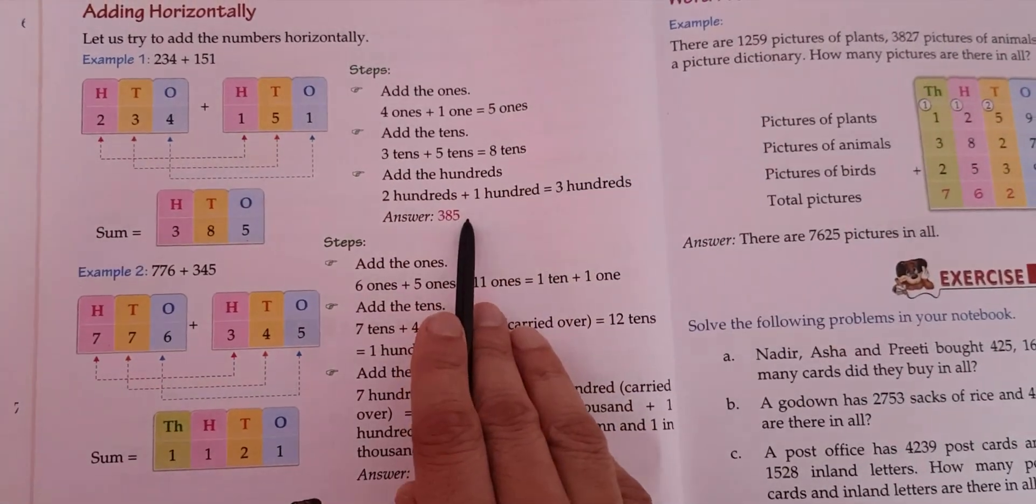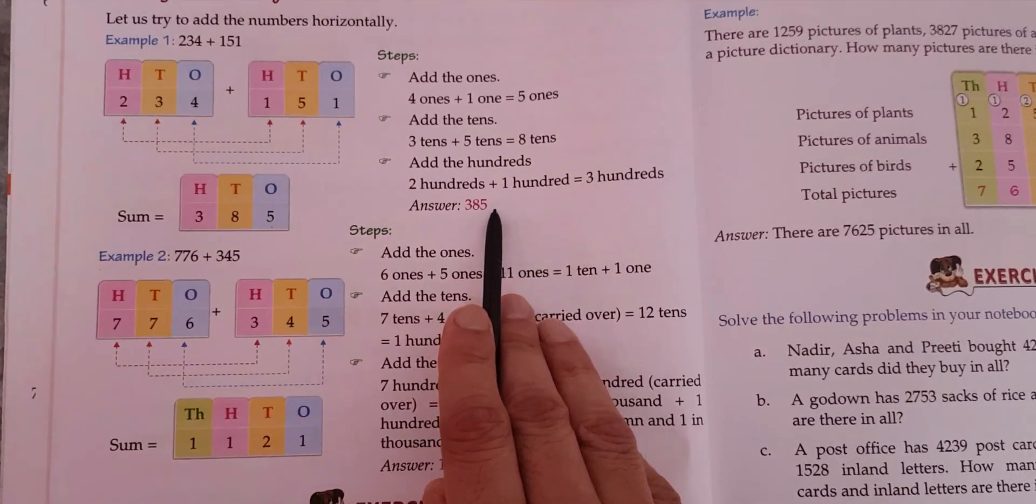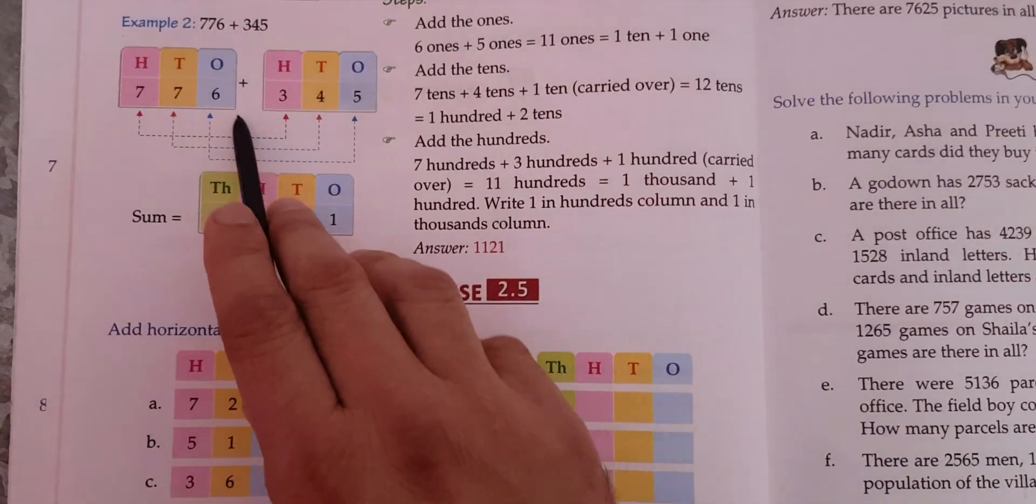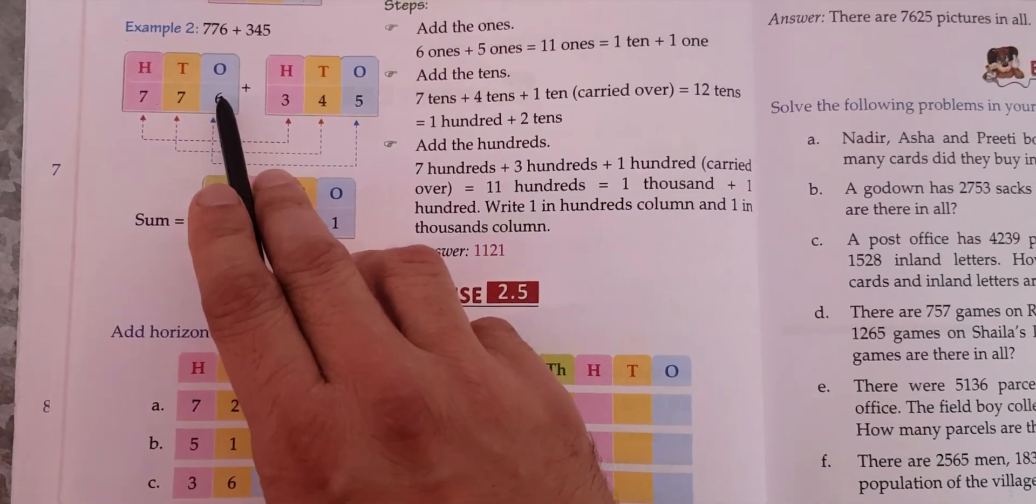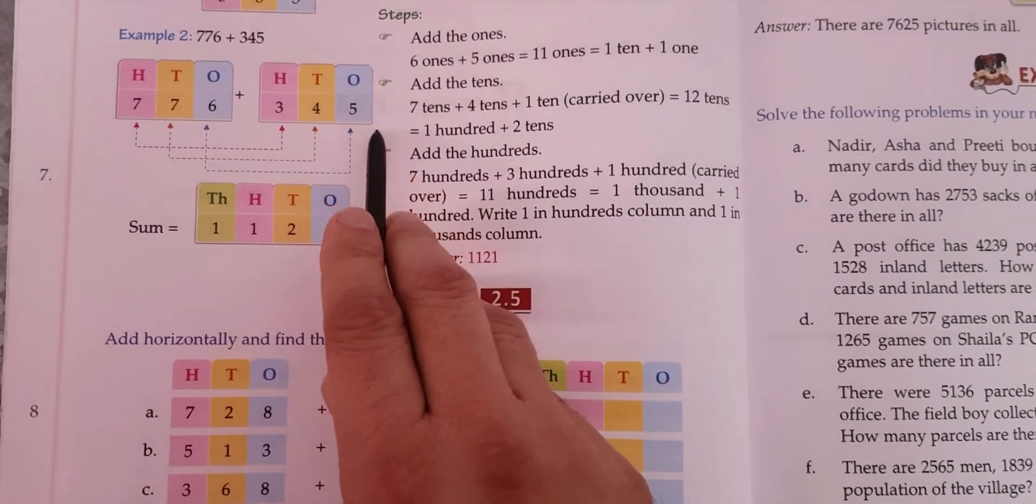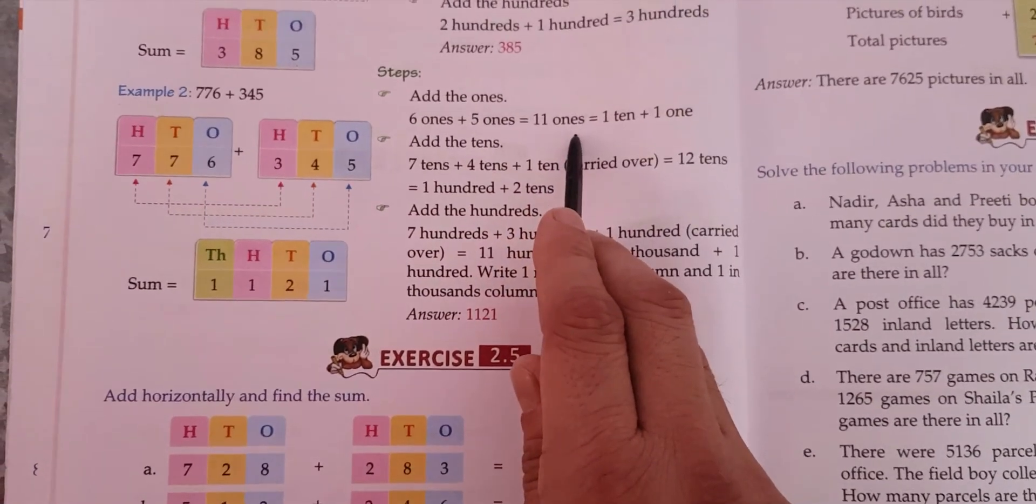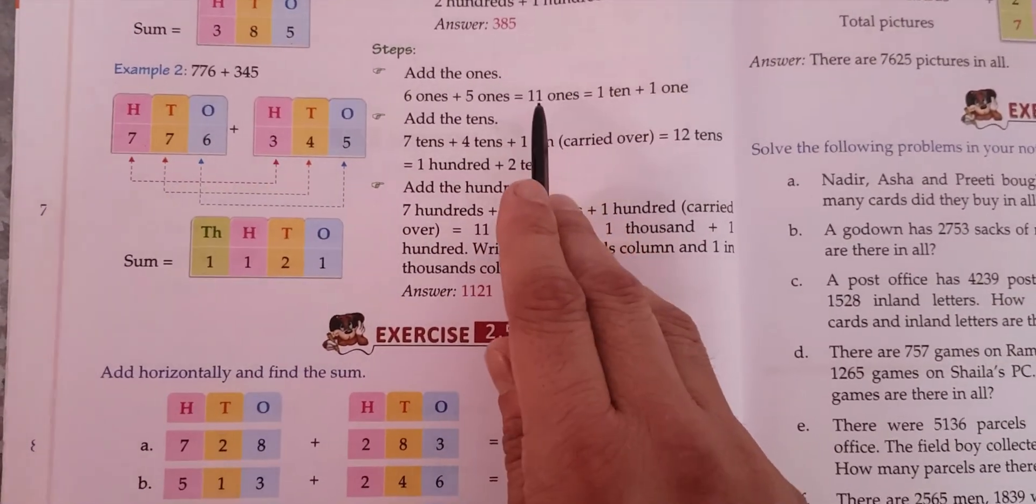So here we have six ones and five ones. Six plus five is eleven ones. So now we break this eleven ones where the ones place one will stand here and one ten will go to the tens place.